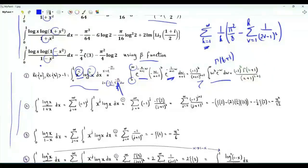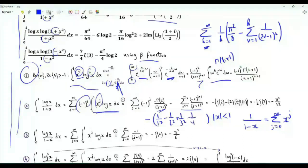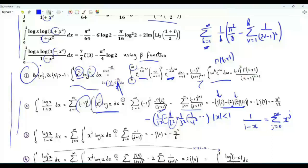For |x|<1, 1/(1−x) = Σ_{g≥0} x^g, and 1/(1+x) = Σ_{g≥0} (−1)^g·x^g. Integrating term by term using Step 1, the integral from 0 to 1 of log(x)/(1+x) yields the sum −Σ(−1)^g/(g+1)². This alternating series equals −(1/2)·ζ(2), giving the result −π²/12.